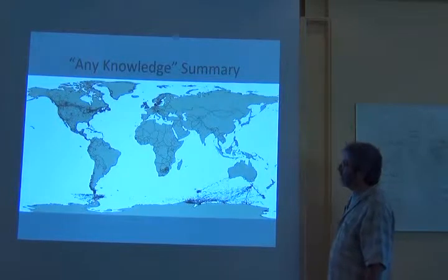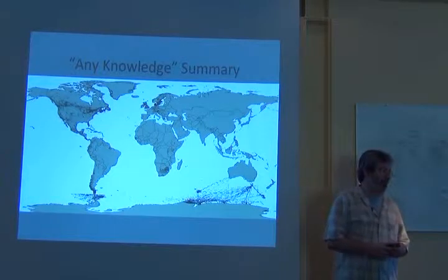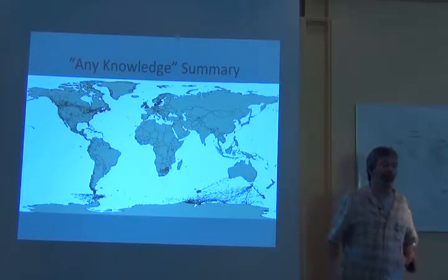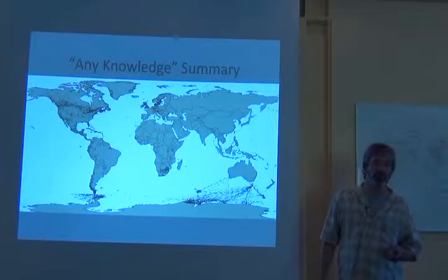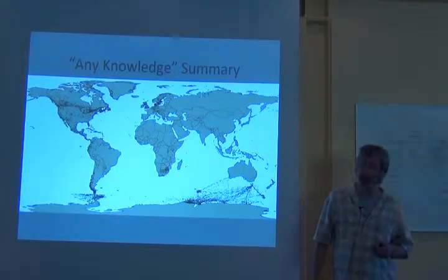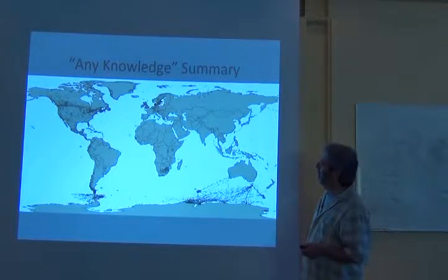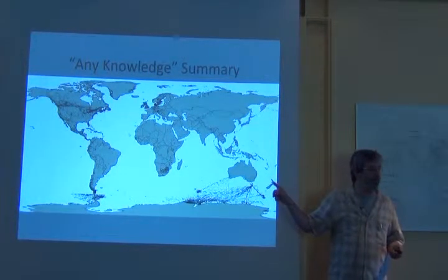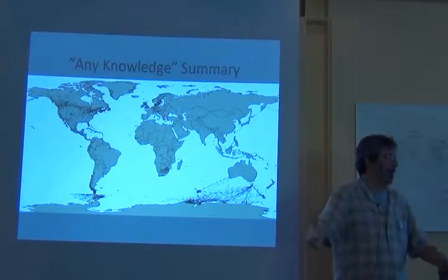If we look just at the points on Earth where there's any knowledge, the world looks like this. What you should be noticing is the gaps, because we're talking about survey gap analysis. Essentially what you see is seven eighths of Africa, a good part of South America, and much of Asia. Notice that Australia is pretty empty here — and now, post Atlas of Living Australia, it's filled in.